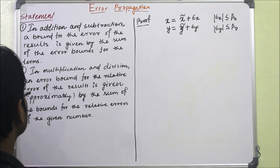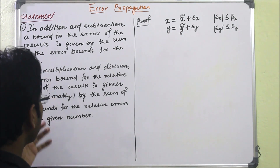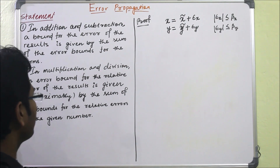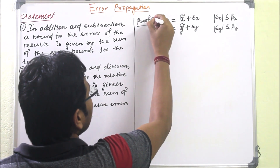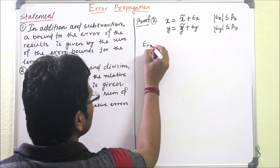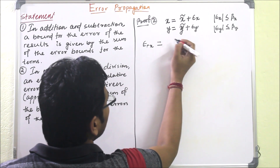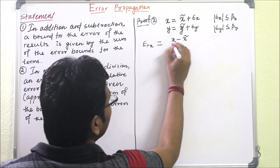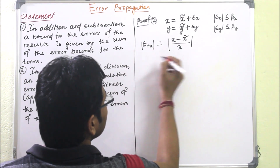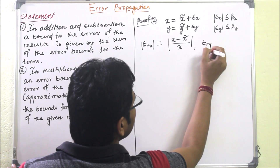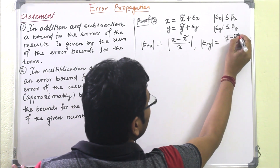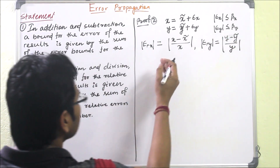Similarly, we can prove this for addition. The second statement tells about multiplication and division of error. It says: an error bound for the relative error of the result is given approximately by the sum of the bounds for the relative errors of the given numbers. The relative error for x is epsilon_rx, which equals (x minus x-tilde) divided by the true value x. Similarly, the relative error for y is epsilon_ry, equal to (y minus y-tilde) divided by y.